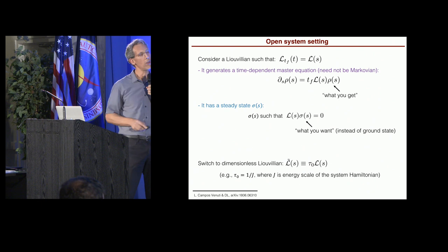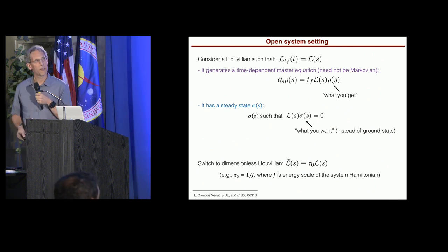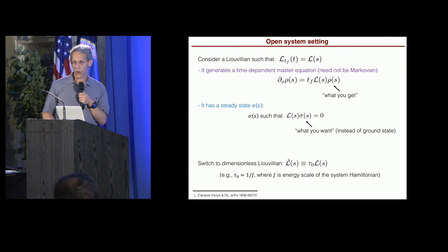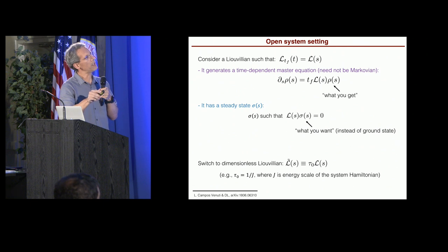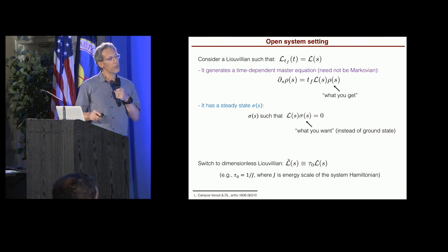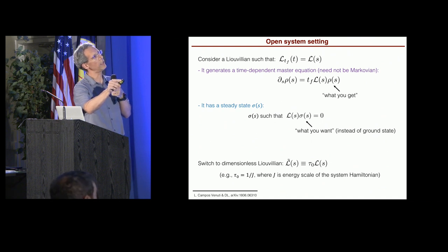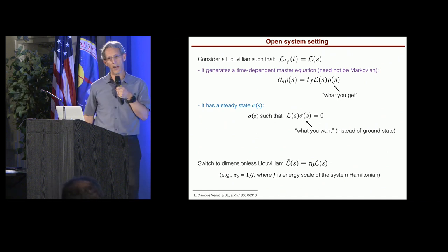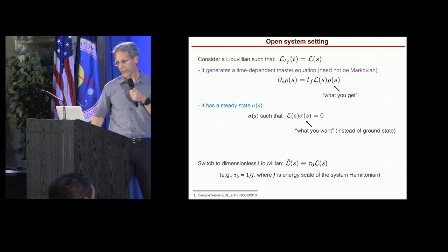Okay. And we're going to look at the distance between those two, the what-you-get-and-what-you-want. So first, just let's switch to a dimensionless Liouvillian. So I'm going to factor out some time scale, tau-naught, because if you look at this equation, you see that Liouvillian has units of inverse time. So now this L tilde is dimensionless. Okay. And now here's the boundary cancellation theorem for open systems. It says the following. Some technical assumptions that are fairly natural.